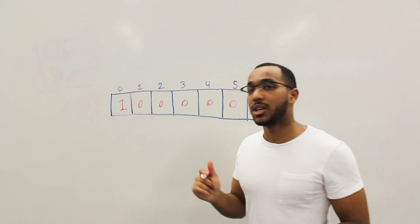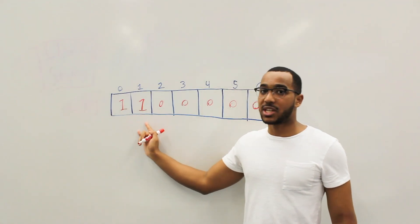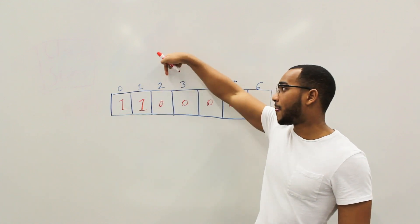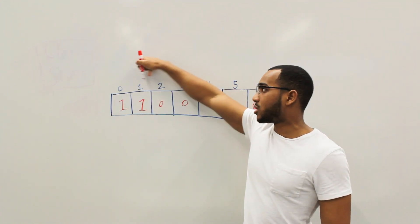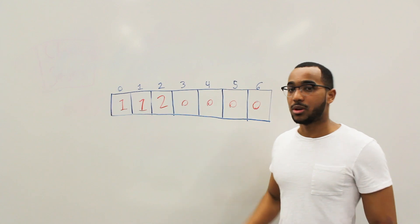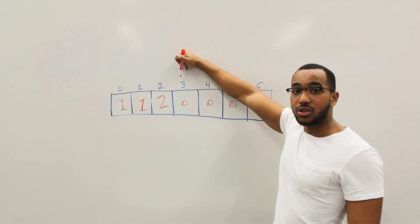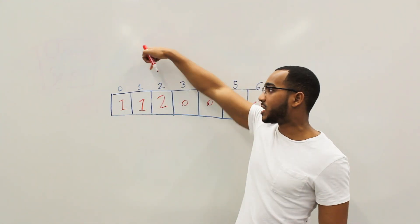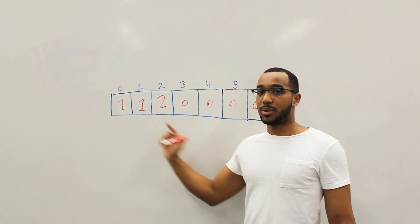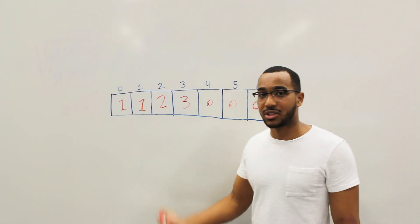The number of unique ways to make zero steps is one — we do nothing. The number of unique ways to make one step is also one — just take the one-step. We need two base cases to solve this table because each cell relies on two previous values. For cell two: take a one-step (look back one → 1) plus take a two-step (look back two → 1), so one plus one equals two.